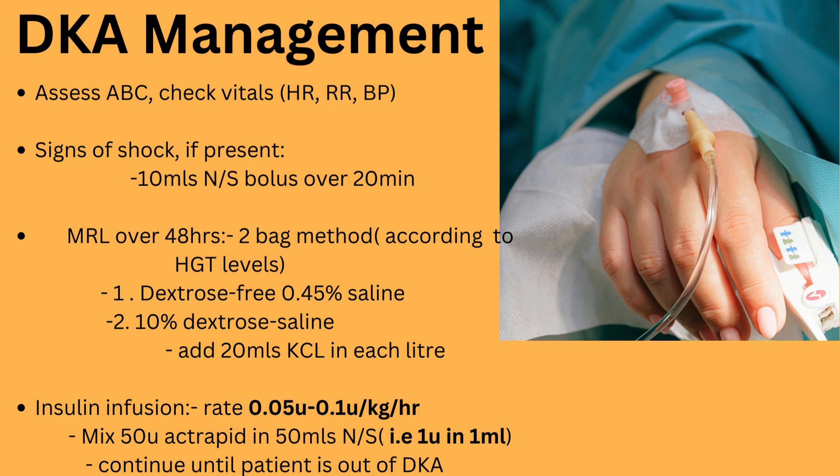Management begins with your ABCs: ensure the airway is patent, the patient is breathing adequately, assess circulation and vitals, and assess for signs of shock. If there is shock, bolus the patient with 10 mL/kg of normal saline over 20 minutes. This can be repeated up to 40 mL/kg.